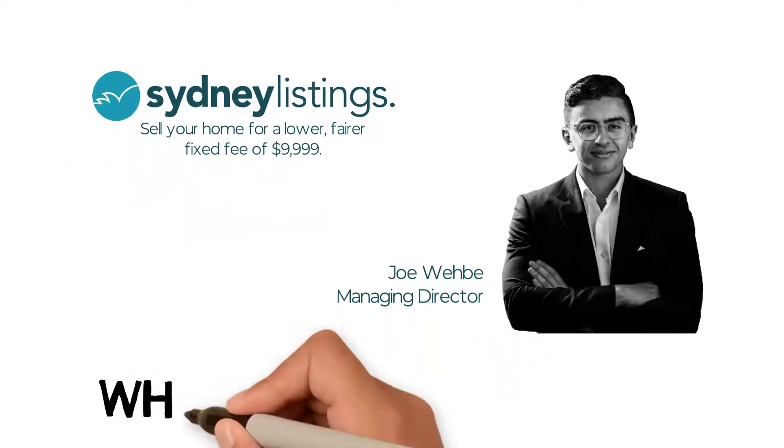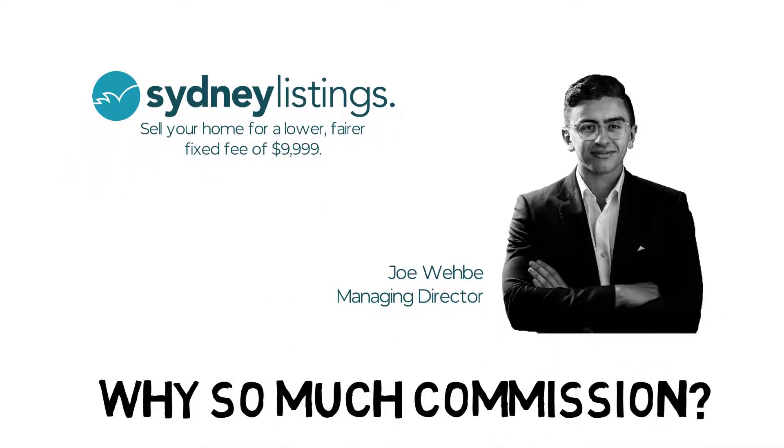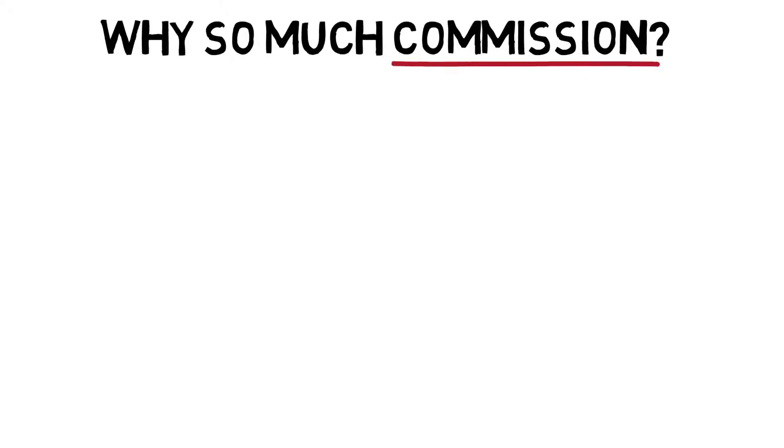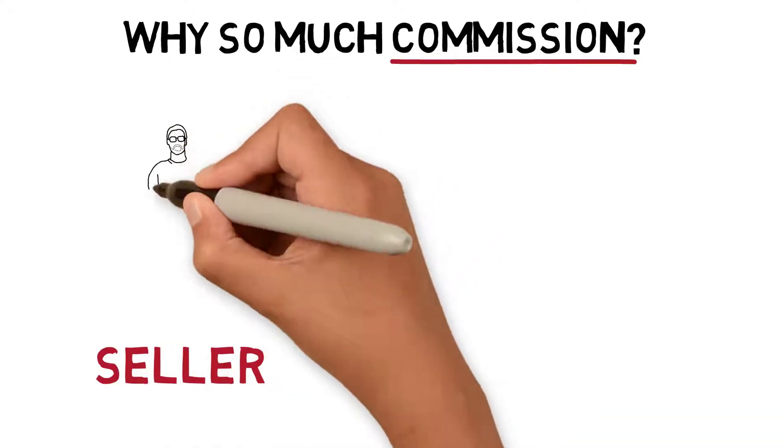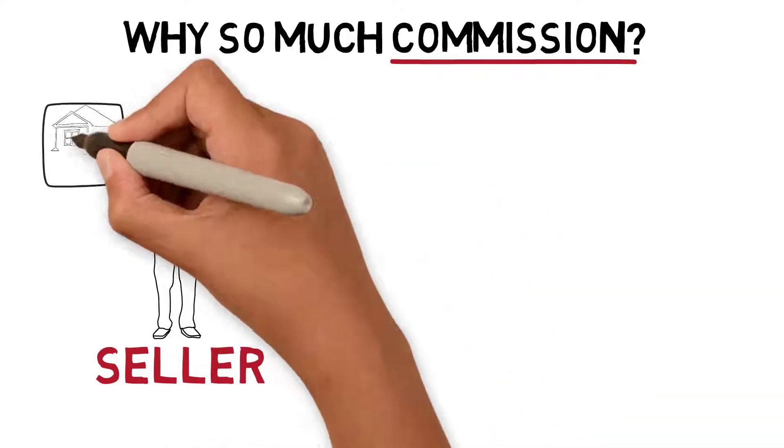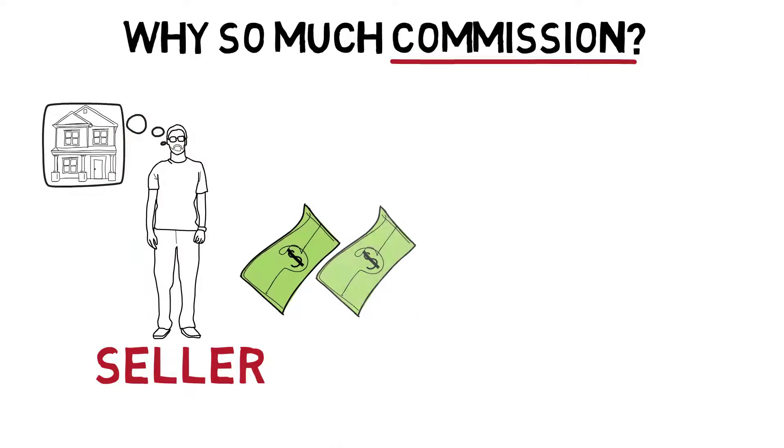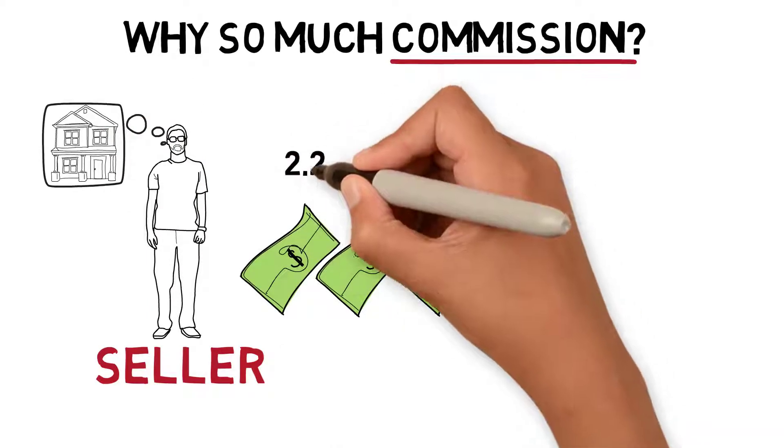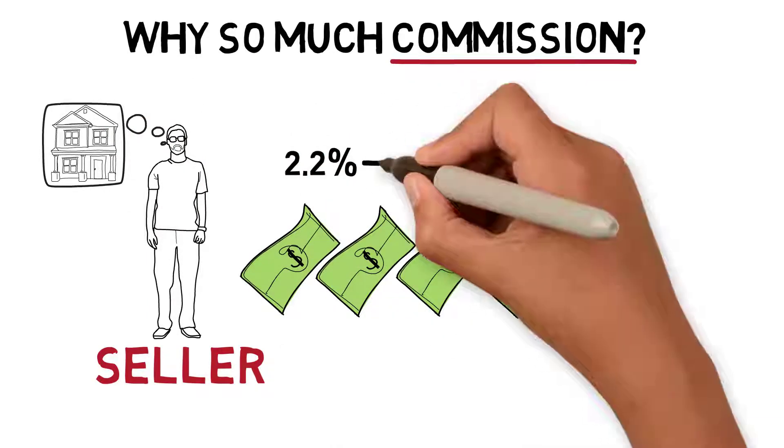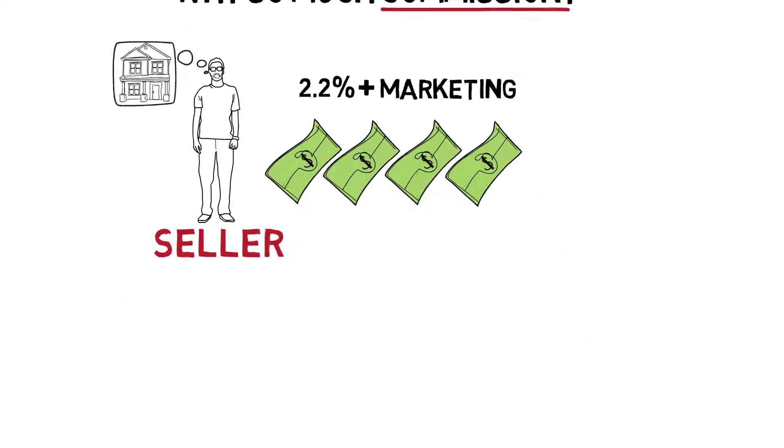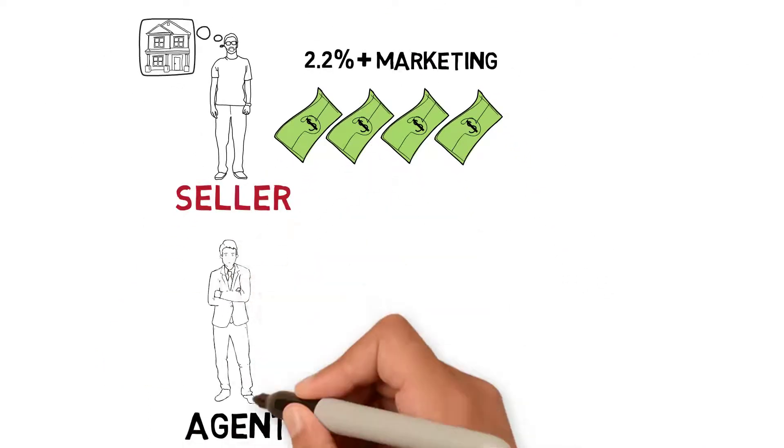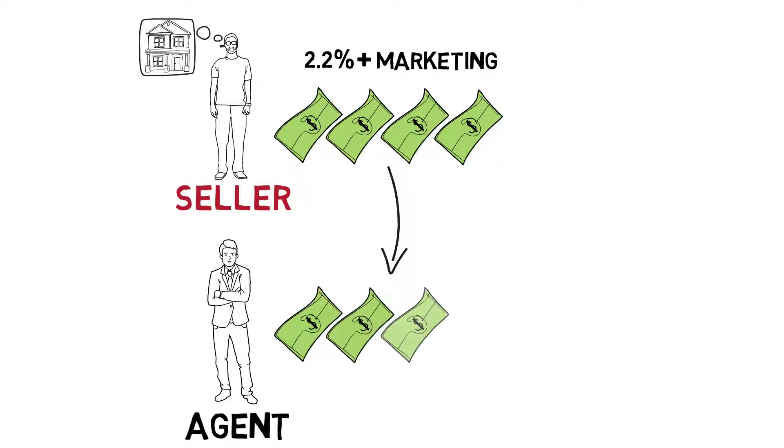Let's look into why agents get paid so much commission. As the seller, you want to sell your home, and it costs you 2.2% of the most expensive thing you own, plus marketing. The agent gets that commission—good service or bad—they're collecting it from you.